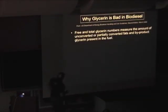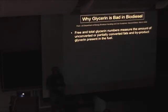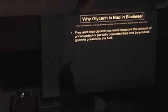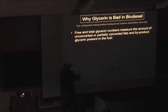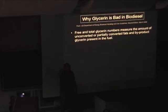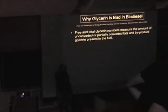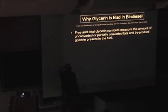Why is glycerin bad? Well, what DOE says is free and total glycerin numbers measure the amount of unconverted or partially converted fats and byproduct glycerin in the fuel. When we look at that big molecule, what we're doing with the GC is measuring — this is a tri, I've got three fingers held out. When we knock one off, it's now a diglyceride. This is a monoglyceride. This is free glycerin, that backbone molecule. What we're measuring with the GC is the weight of the glycerin — either free, meaning no free fatty acids connected, or bound to a free fatty acid chain.